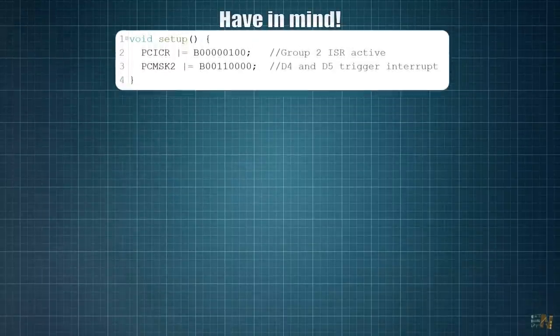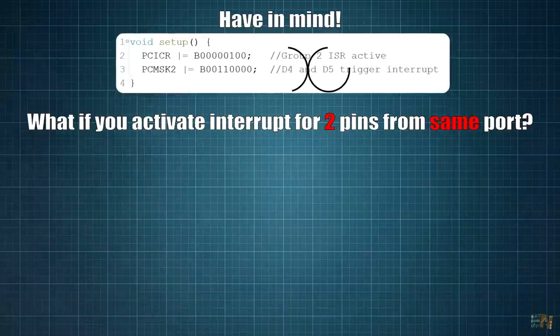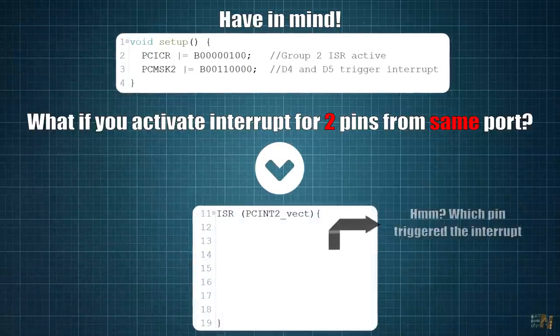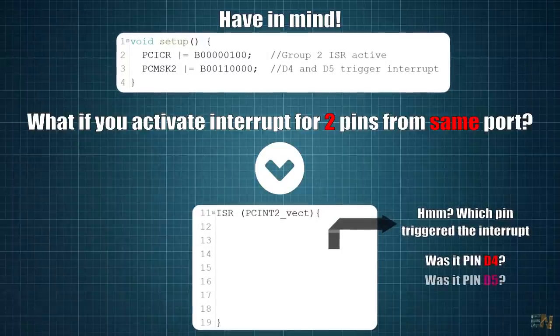Ok, now let's see some things that you should have in mind. If you set for example pins 4 and 5 which are from the same port to trigger interruptions without consulting which pin created the interruption, you can't possibly know which one of the two pins triggered the ISR.